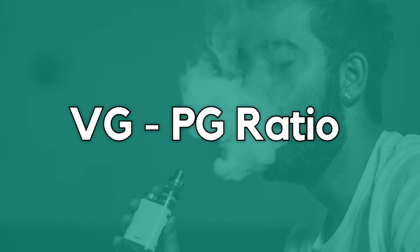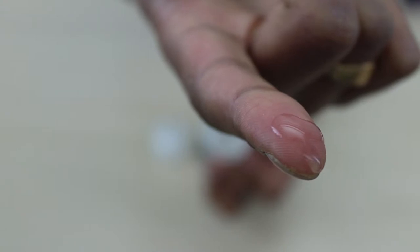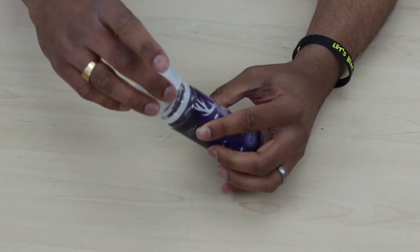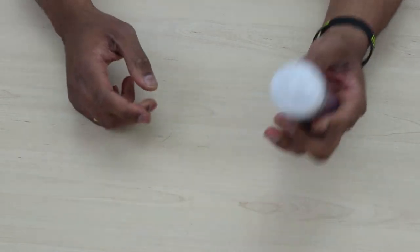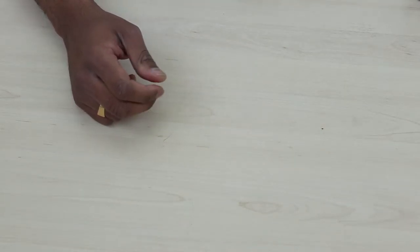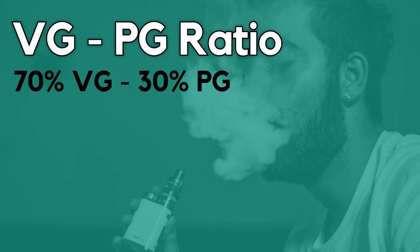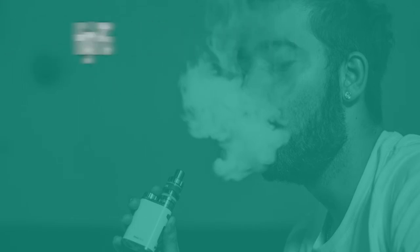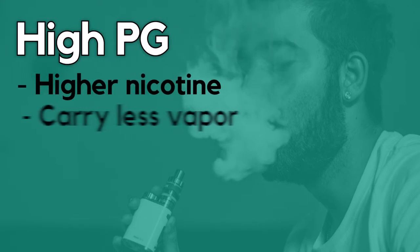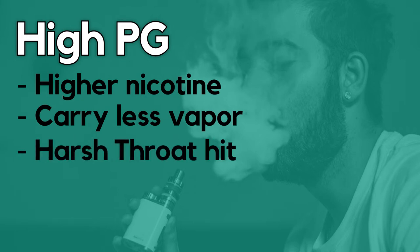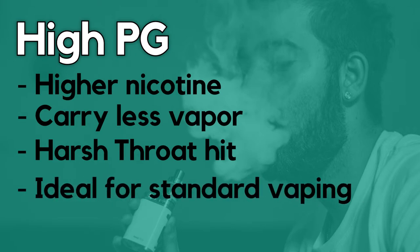VG-PG ratio. PG is a thinner liquid compared to VG. VG is thicker, does not carry much flavor, but creates more vapor and thicker clouds. PG is thinner but carries more flavor and has more of a throat hit. The VG-PG ratio is the percentage indicating how much VG and PG is in the liquid — for example, a 70-30 ratio means 70% VG and 30% PG. PG-heavy liquids have a higher nicotine level because of low vapor production, produce a harsher throat hit, and are usually made for standard vaping with atomizers above 1.0 ohm.